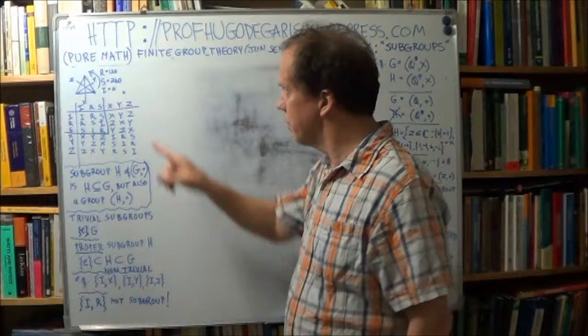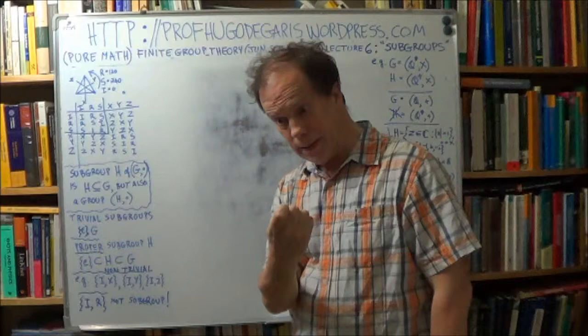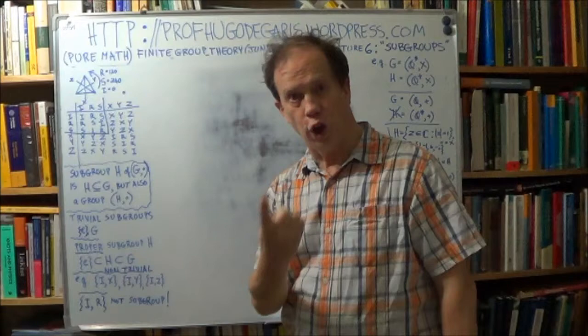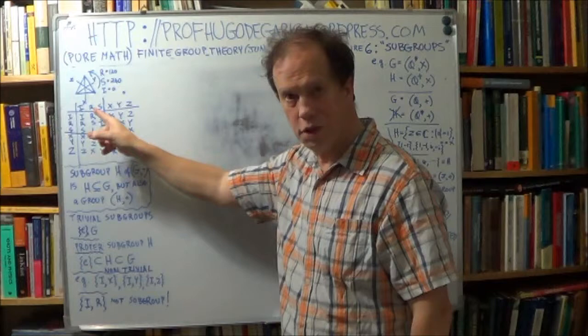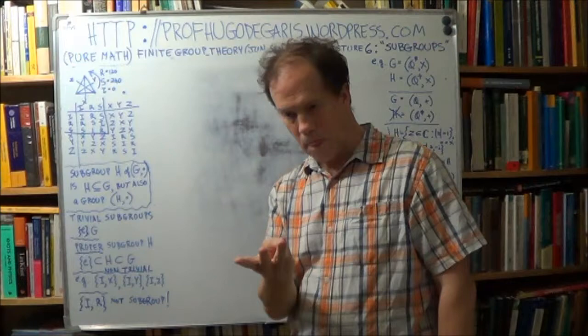Now, can you remember from last lecture, to prove that a set with a binary operator is a group, you have to satisfy four conditions. Now, we discussed this at length last time. Long lecture. Can you remember the four conditions? The set and the binary operator have to be closed. So, the result that you get has to belong to the set that you start with. So, closure.